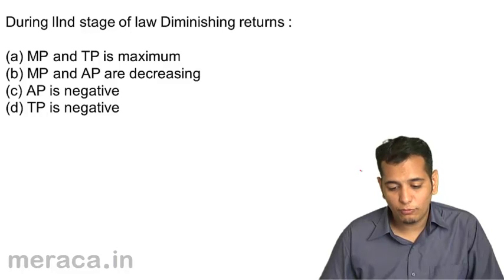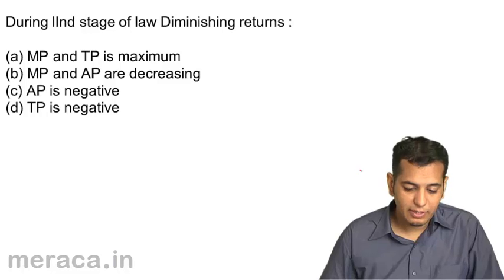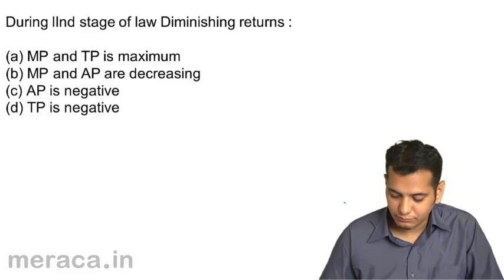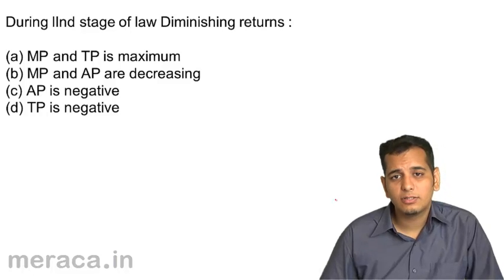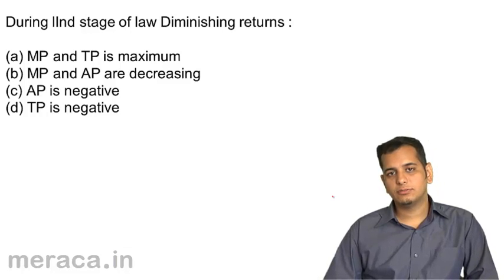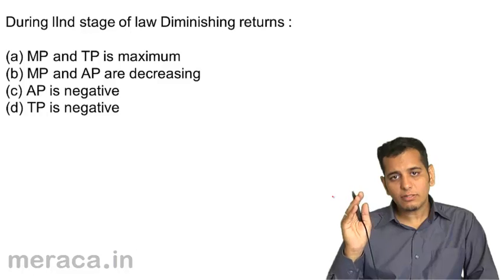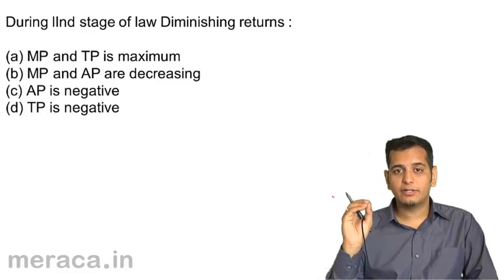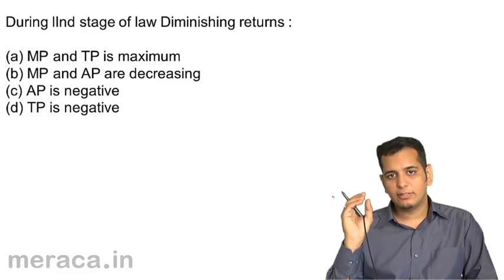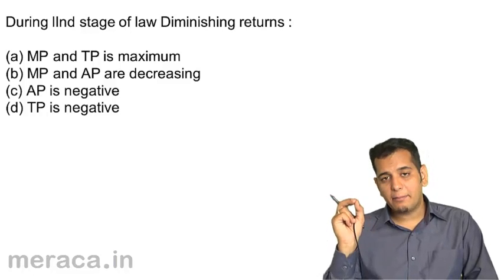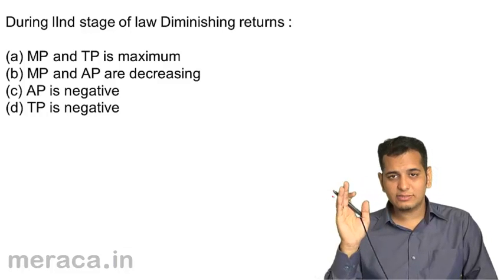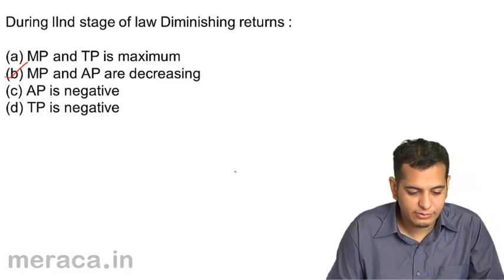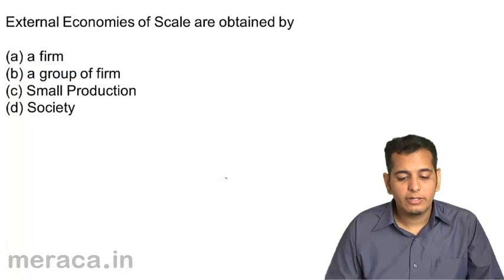During the second stage of the law of diminishing returns: a) MP and TP are maximum, b) MP and AP are decreasing, c) AP is negative, d) TP is negative. Remember, the first stage ends where AP is maximum and MP equals AP. So in the second stage both MP and AP tend to fall — the answer is b, MP and AP are decreasing.